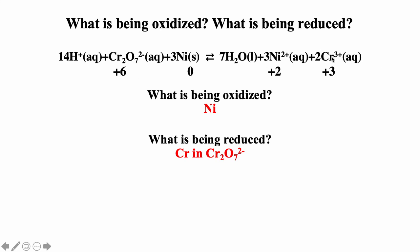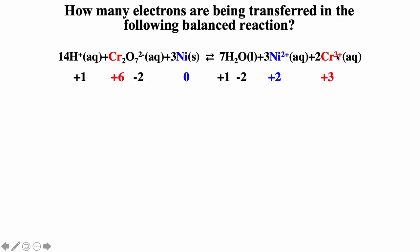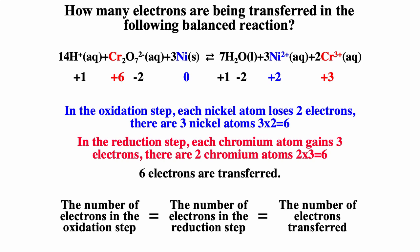In the products, chromium is plus three. By looking at the oxidation states, nickel is being oxidized. The coefficient does not affect the oxidation state but does affect the total number of electrons. Each nickel loses two electrons and there are three nickels: 3×2 = 6 electrons in the oxidation step. For the reduction step, each chromium goes from plus six to plus three — that's three electrons each — with two chromiums: 2×3 = 6 electrons. The number of electrons in the oxidation step must equal the number in the reduction step.